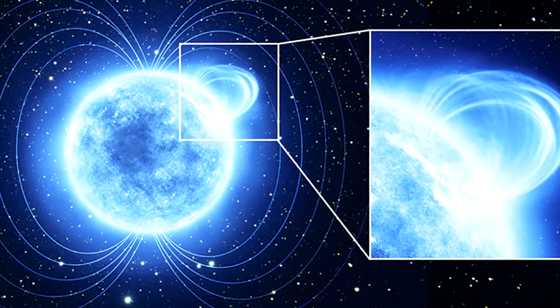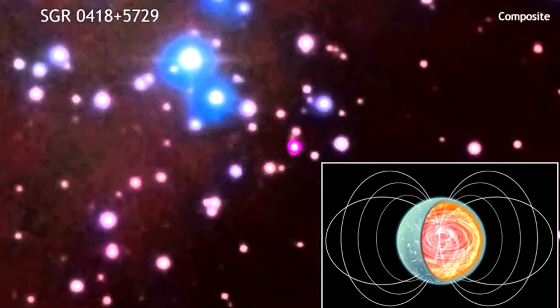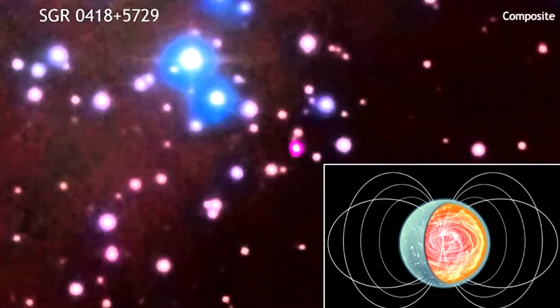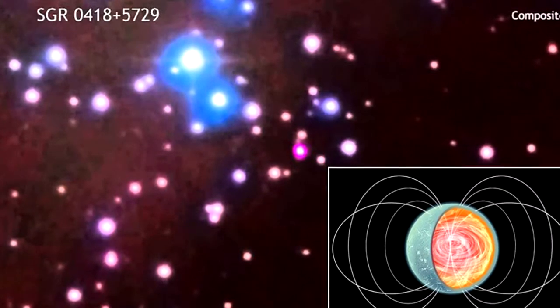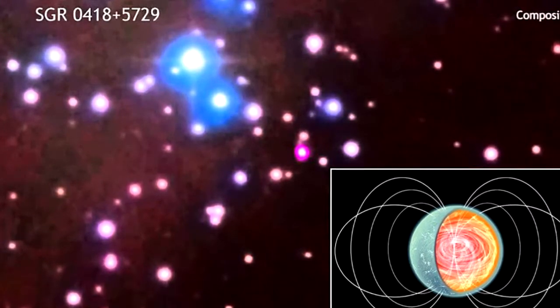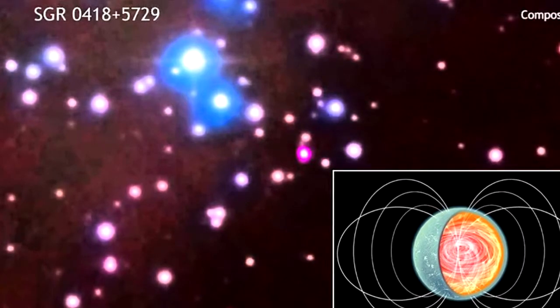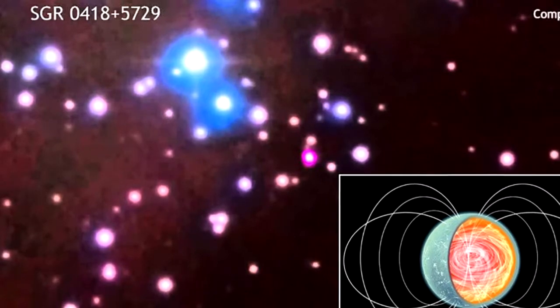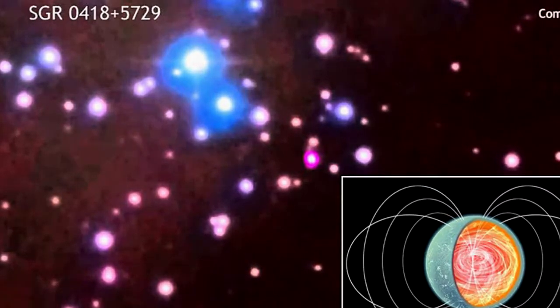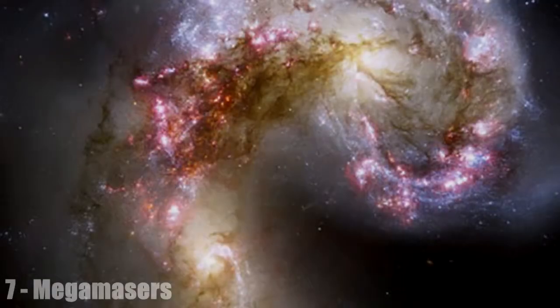Magnetars are pretty small, around 20 kilometers wide. Size-wise, you'd be able to fit one quite easily on the moon. But it'd probably be best if you didn't. Even from that distance, the magnetic field would be strong enough to stop a locomotive on Earth. Luckily, this one is 6,500 light years away.